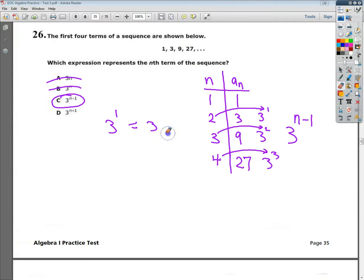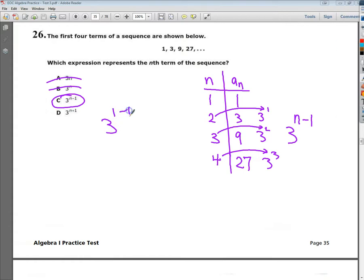But for the next one, I do 3 to the n minus 1. So 3 to the 1 minus 1, which makes it 3 to the 0 power. Anything raised to the 0 power is 1. So I plugged in a 1 here. I got a 1. That's a good thing.